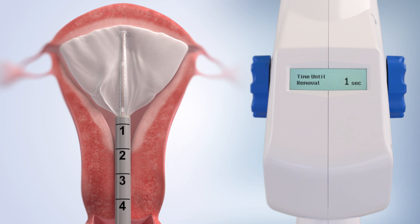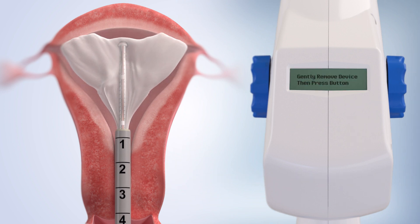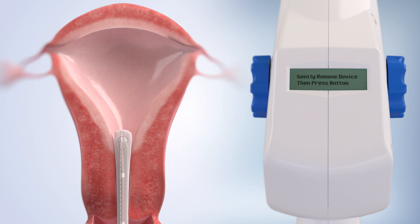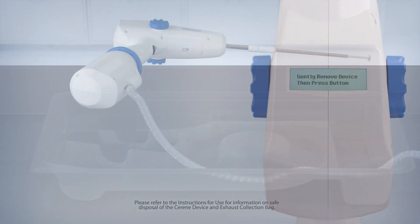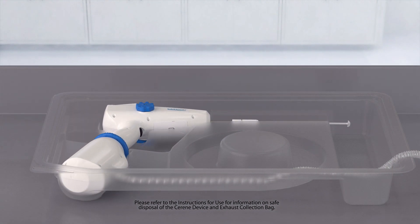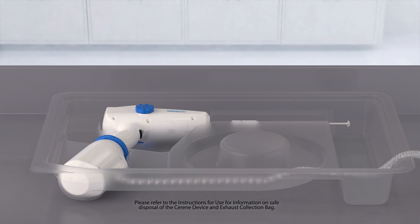Once the device removal countdown is complete, gently withdraw the Serene Device from the patient. Press and release the button and set the Serene Device aside to complete venting of any excess nitrous oxide. Once the LCD screen indicates the Serene Device is safe for disposal, disconnect the exhaust collection bag.